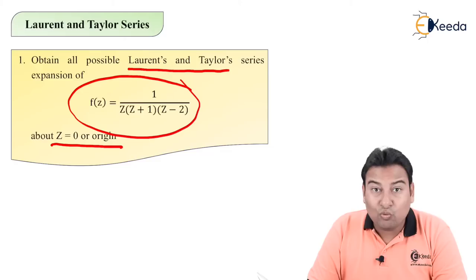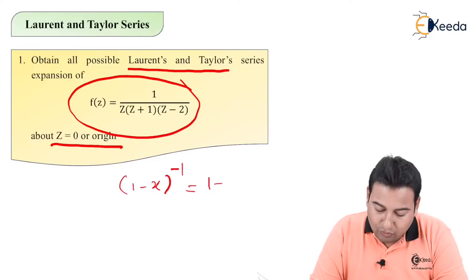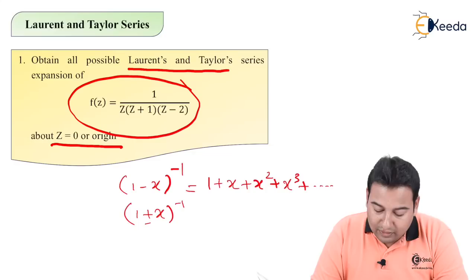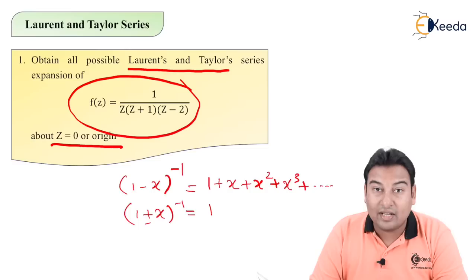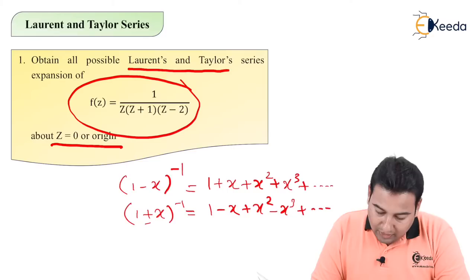Before going ahead, let me give you two basic formulas required in this question. First: (1-x)⁻¹ = 1 + x + x² + x³ + ⋯. Second: (1+x)⁻¹, since it has a positive sign and negative sign, gives alternate plus-minus: 1 - x + x² - x³ + ⋯